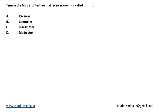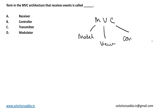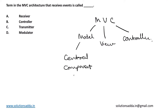This is a question from software engineering. In the MVC architecture, the term that receives events is called — options are: receiver, controller, transmitter, or modulator. MVC means Model View Controller. The model is the central component of the architecture. The view represents information as charts, diagrams, or tables.